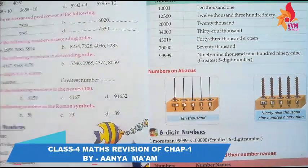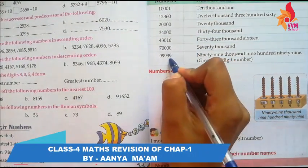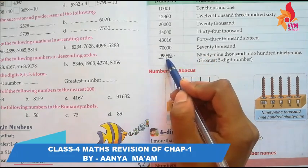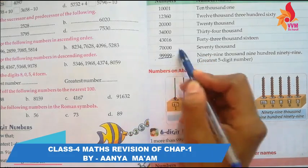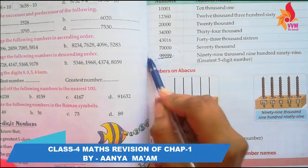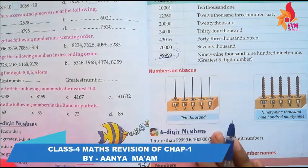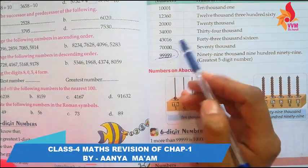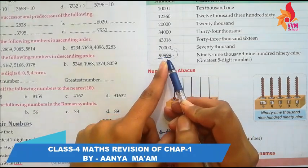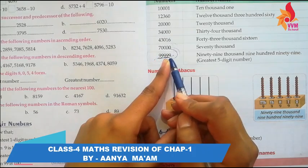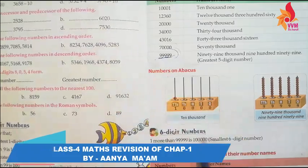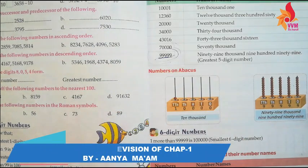So if we need to write a number name, we look at: ones, tens, hundreds, thousands, ten thousands. For example, 99,999 — its number name is ninety-nine thousand nine hundred ninety-nine. We start reading from the left side. If a six-digit number starts, the next place is 1,00,000.